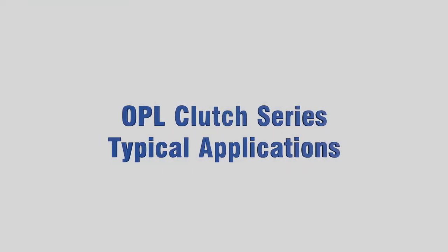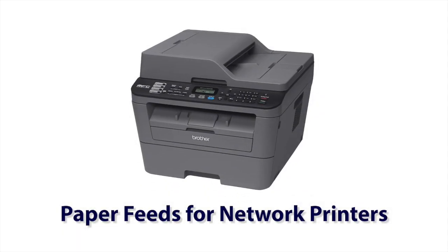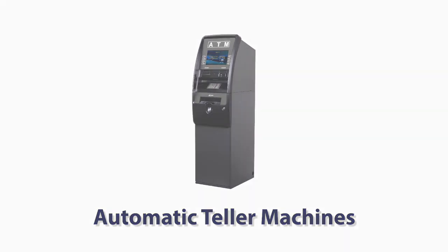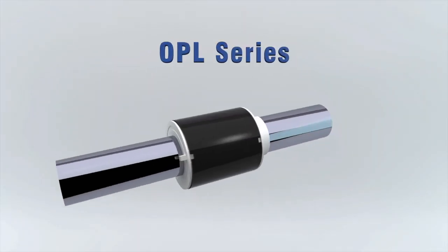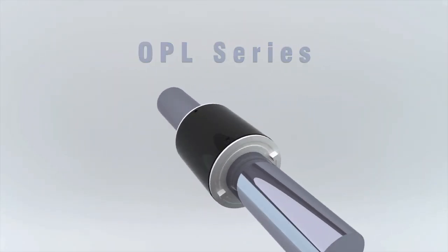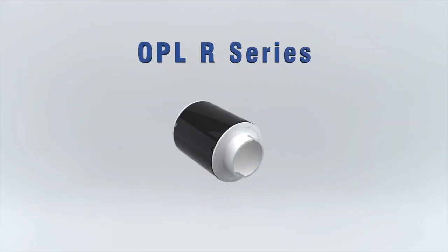Typical applications for OPL clutch series are paper feeds for network printers, copy machines, and automatic teller machines. OPL clutches come either with a shaft or with a hollow bore, the OPL R series.